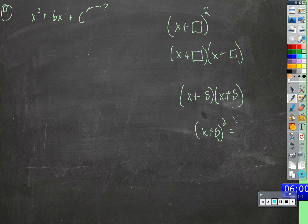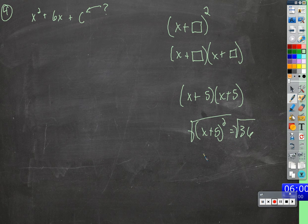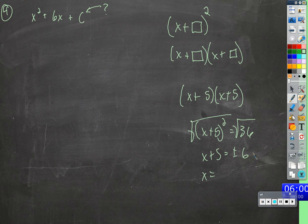We could use it to solve equations like if x plus 5 squared equaled 36. We could take the square root of both sides — you get x plus 5 equals plus or minus 6. x, when we subtract 5 from positive 6, will be 1, and when we subtract 5 from negative 6, we'll get negative 11, and we'll have solved it.